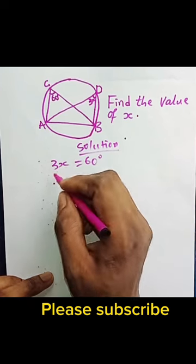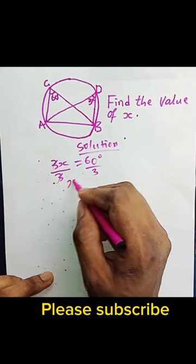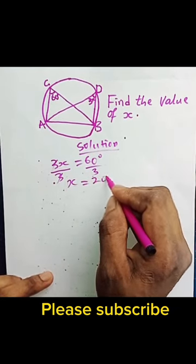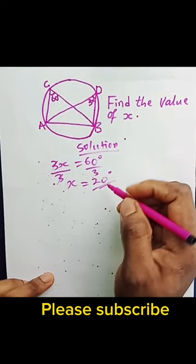...and x will equal 20 degrees, because 60 divided by 3 gives 20 degrees.